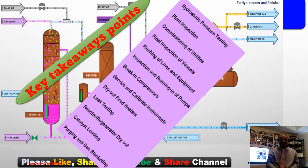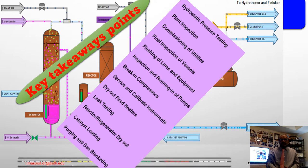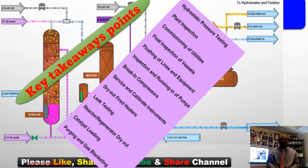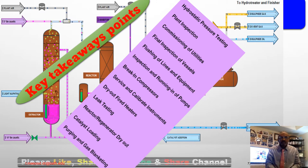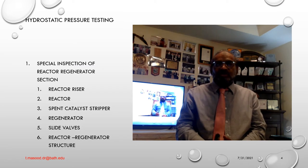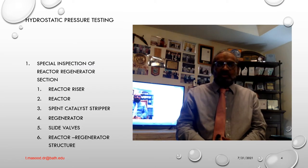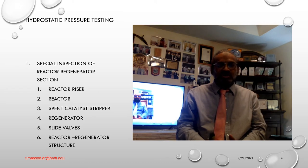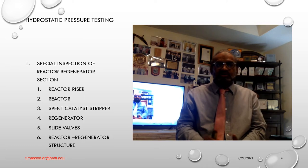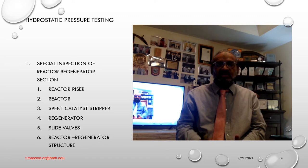Key topics include leak testing, reactor-regenerator dry-out, catalyst loading, purging, and gas blanketing, and special inspection of the reactor-regenerator section. We are going to discuss only UOP design specifications and standards because we have worked on a UOP absorbing unit. A smooth start-up will depend to a large degree on the thoroughness with which the unit is checked out beforehand. Every instruction detail must be checked against the UOP design specification standard and good construction practice.